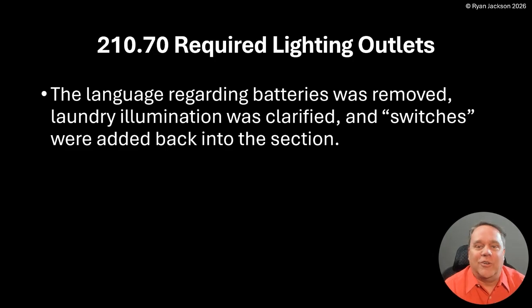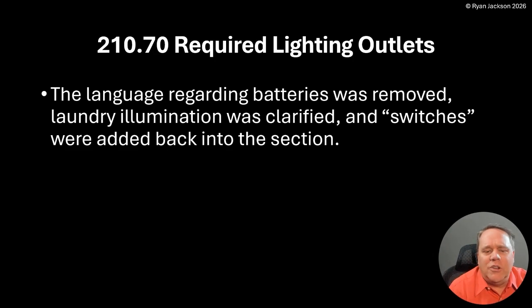So this is the rule that tells you where you have to have a lighting outlet. You've got to have a lighting outlet in the kitchen, in the bathroom, in the bedrooms, and in the laundry area. We added laundry area in the 2023. And as is often the case, when you add a new rule, three years later you have to come back and fix it. So we'll take a look at what we did here in Article 210, branch circuits 210.70 required lighting outlets. The language regarding batteries was removed, laundry illumination was clarified, and switches were added back into the section.